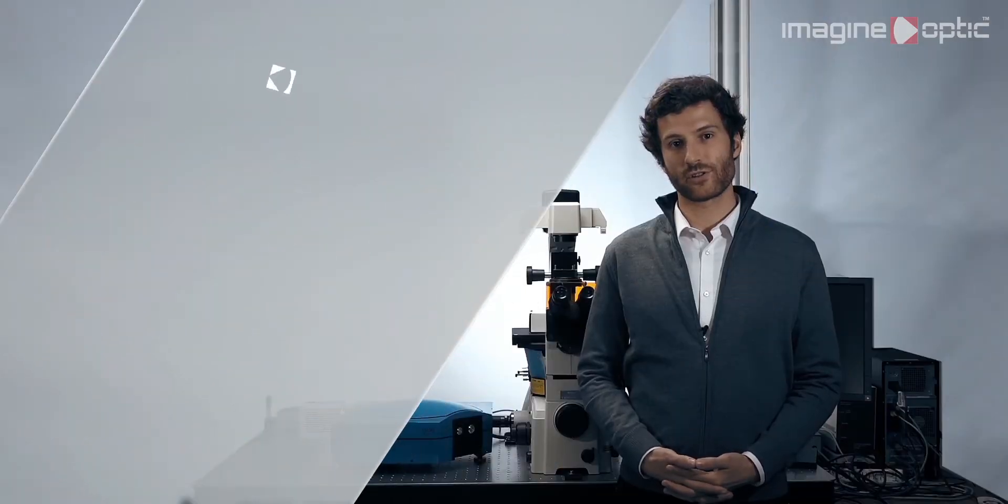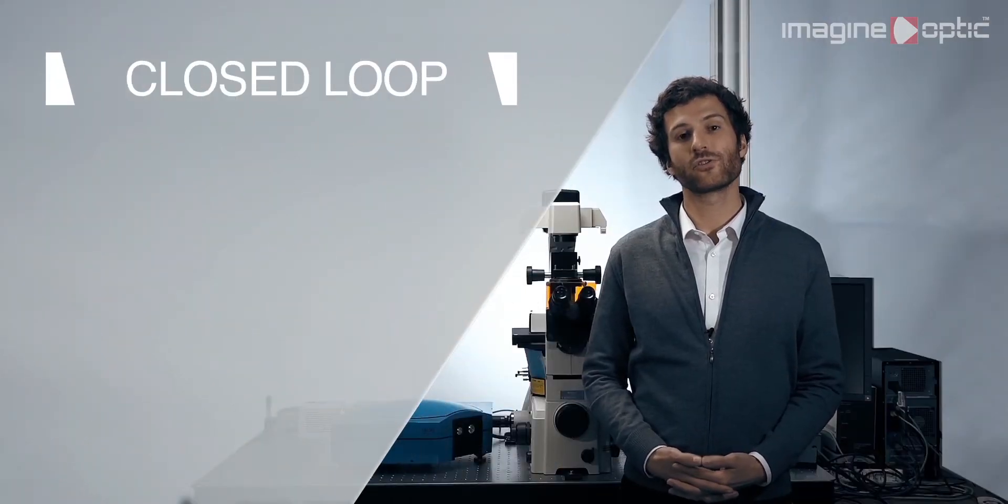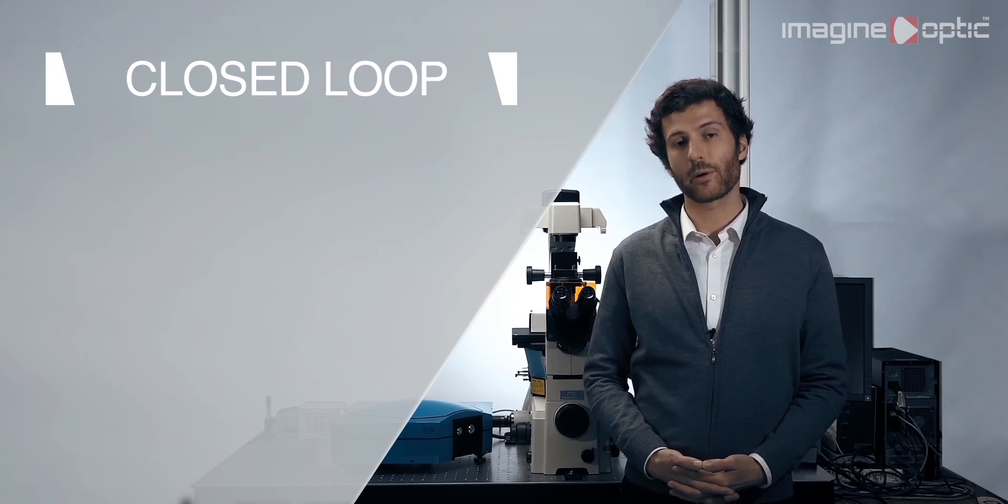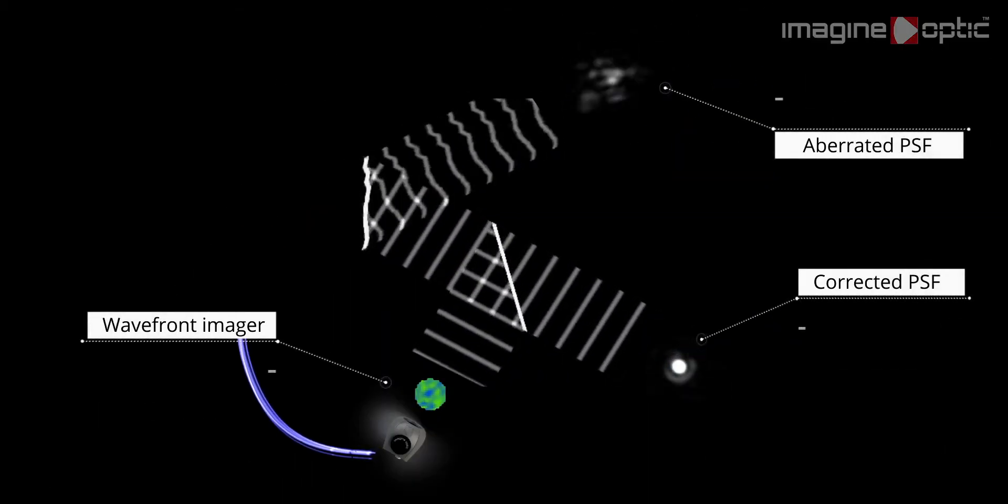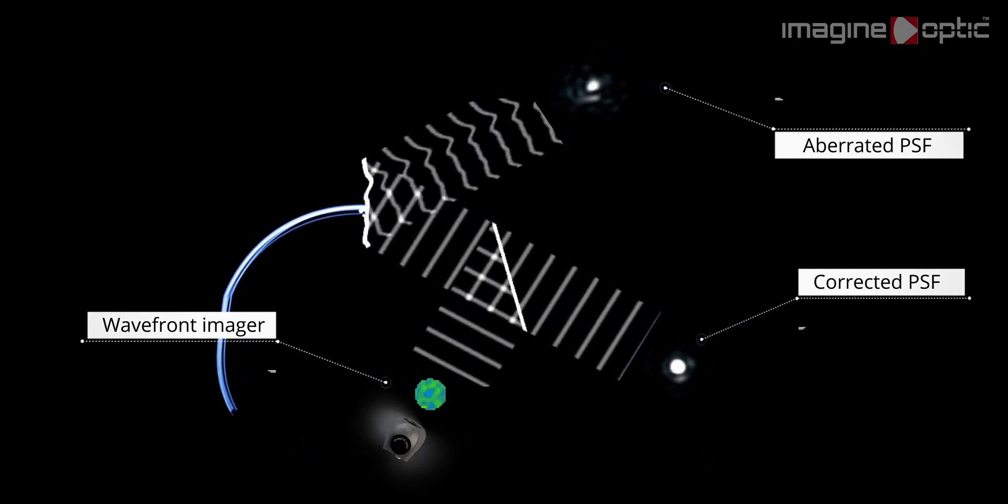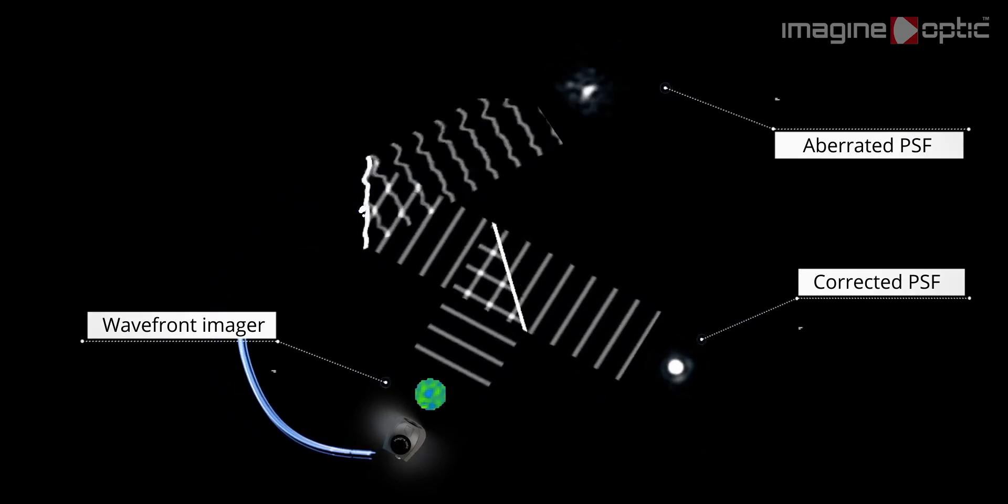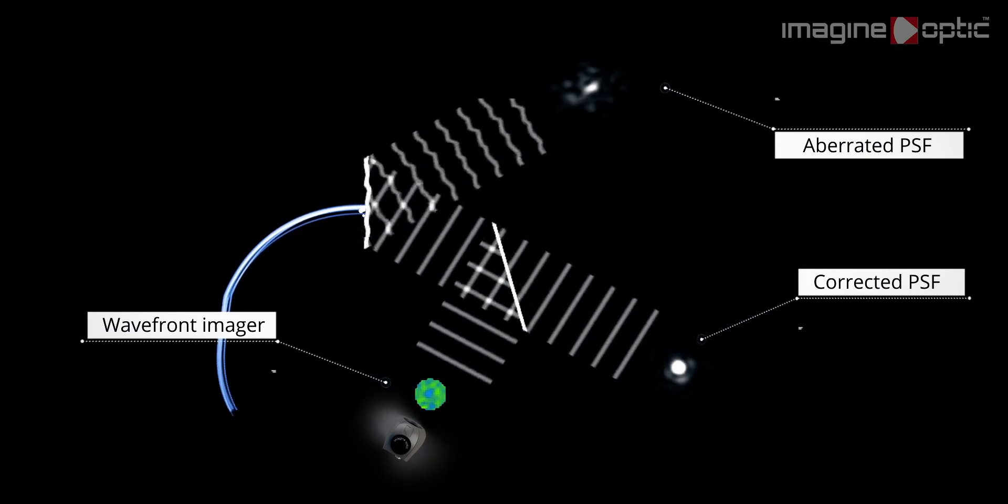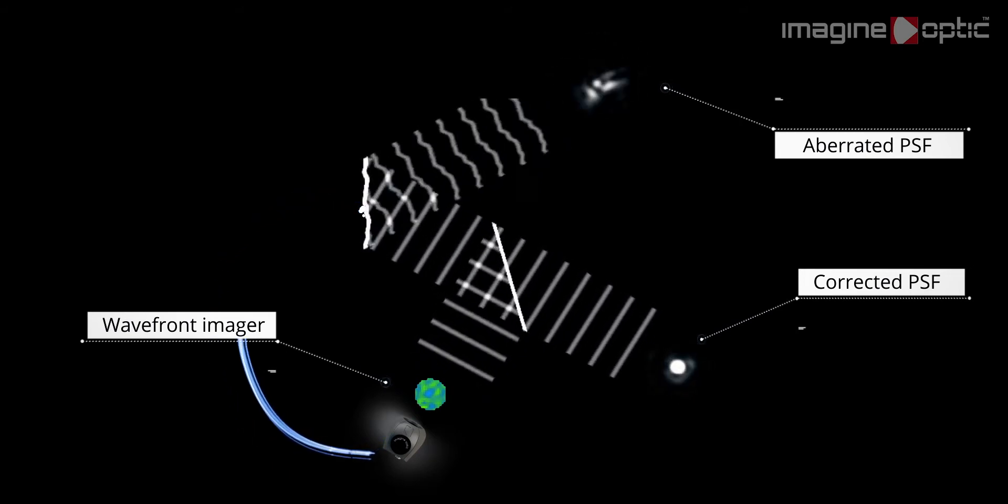The next step of the calibration aims to correct most of the aberrations of the optical setup by performing the closed-loop corrections. In this method, the light from a point source is analyzed using a wavefront sensor still attached to the camera port of the Mikao, and the measured aberrations are corrected by the deformable mirror.